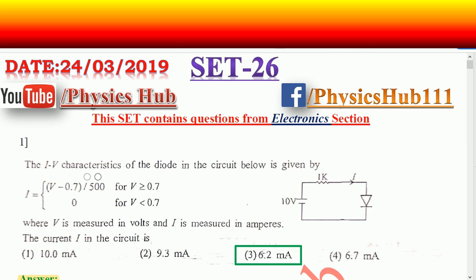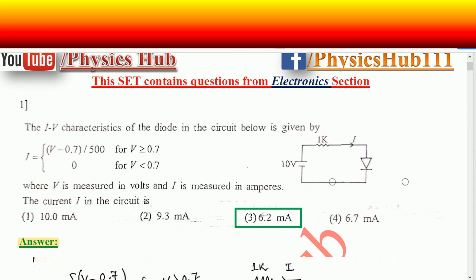The first question reads: the IV characteristics of the diode in the circuit below is given. You can see the circuit — a 10 volt battery is connected with a 1 kilo ohm resistance in series and a diode. V is measured in volts and I is measured in amperes. Find the current I in the circuit. This question is basically very easy if you know Kirchhoff's voltage law, so that's what we are going to use here.